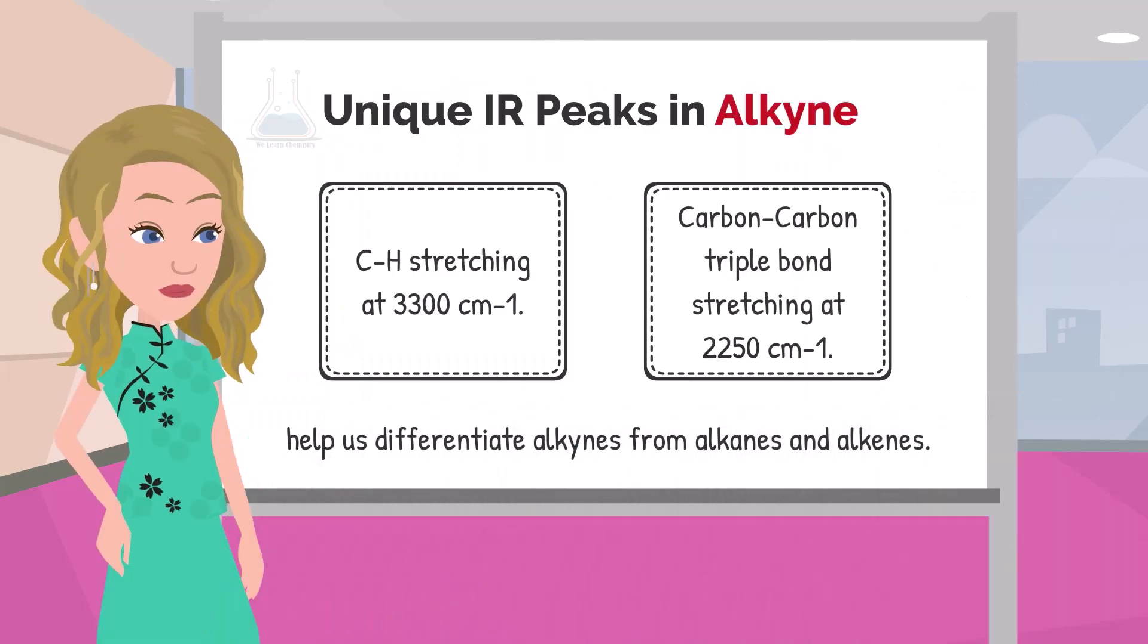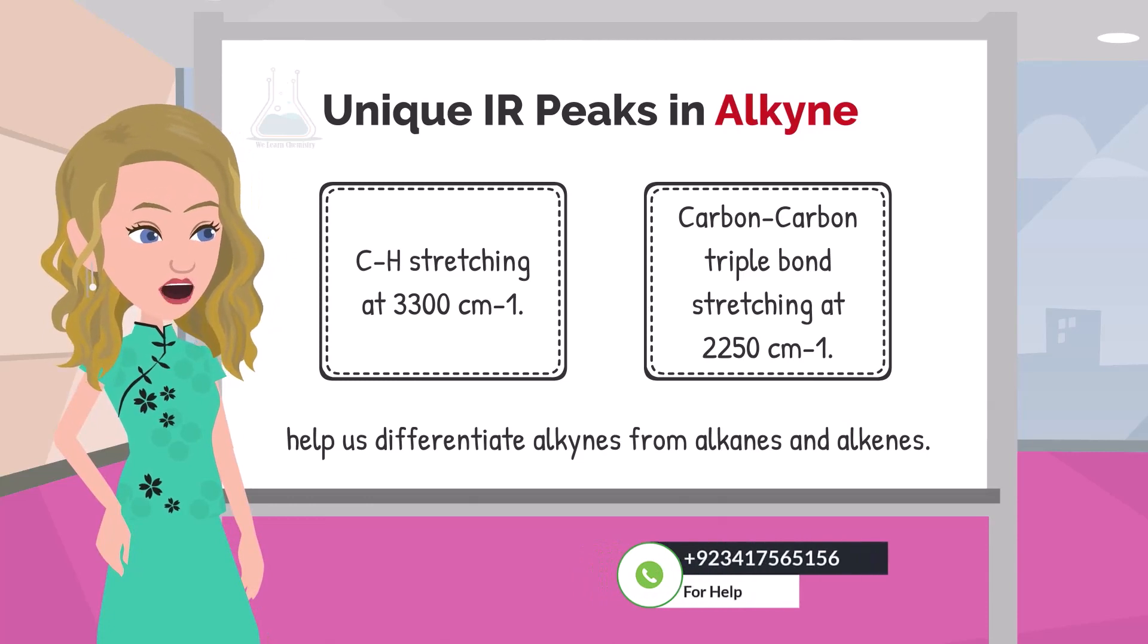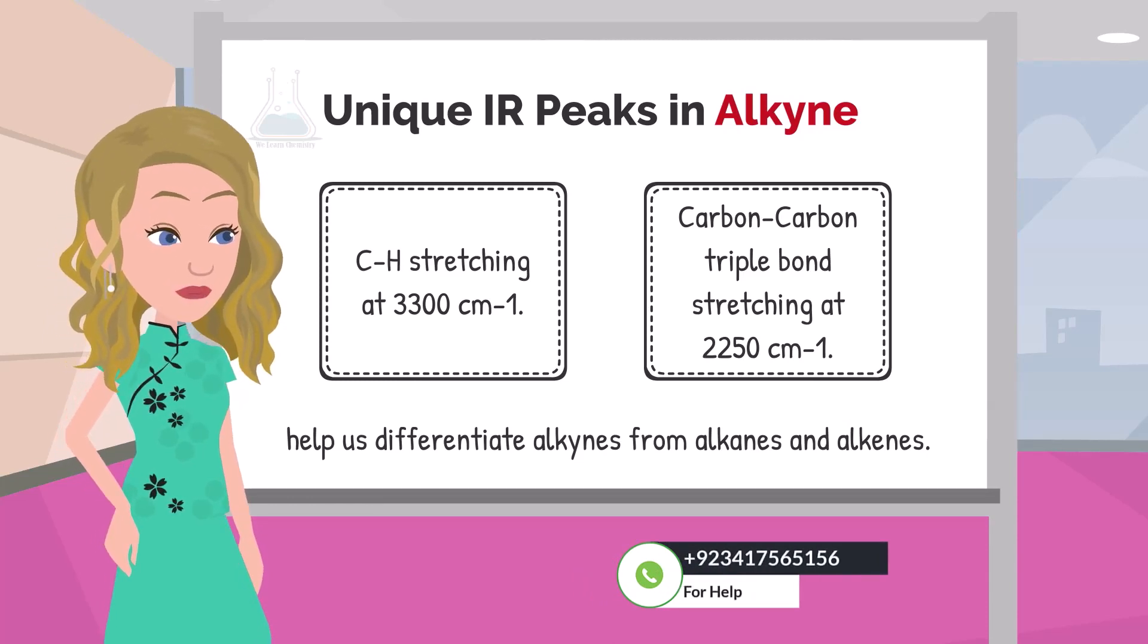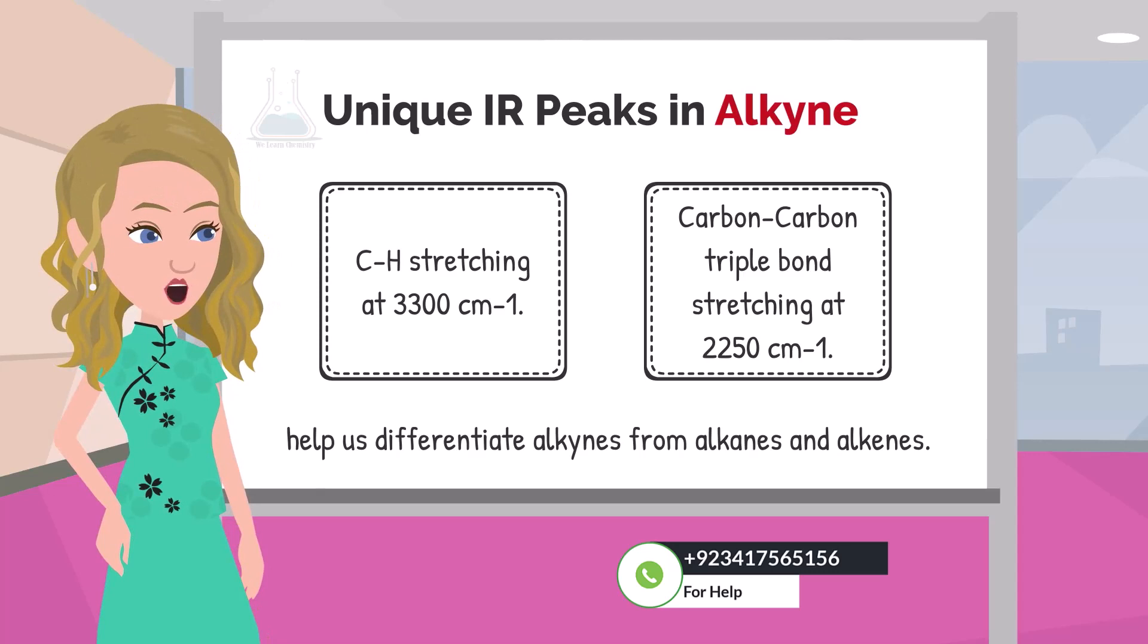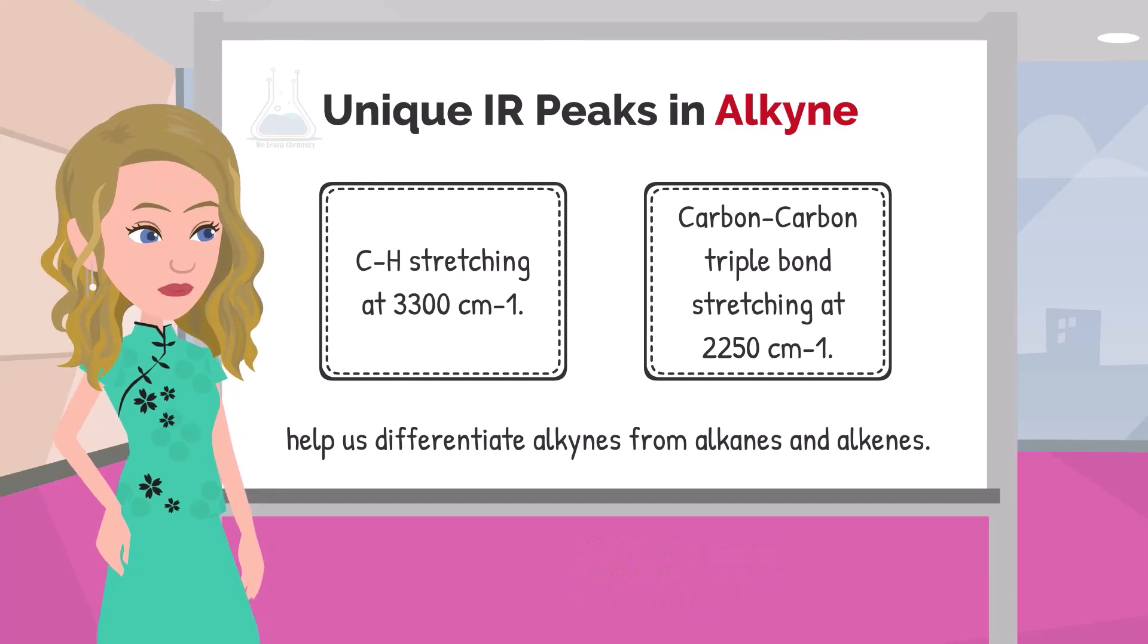Carbon-carbon triple bond peak and CH stretching vibration peak where the carbon atom is SP hybridized is a unique feature of the alkyne which is not observed in the IR spectrum of alkane or alkene. This can help us differentiate alkynes from alkanes and alkenes using IR spectroscopy.